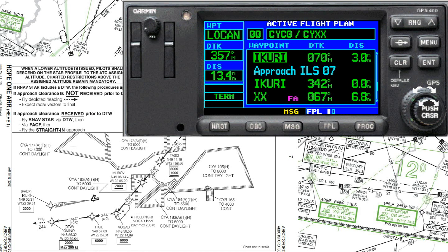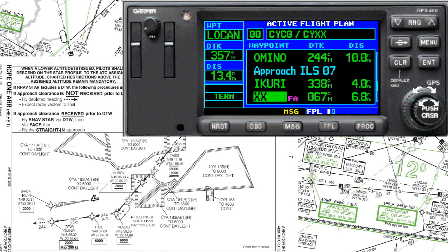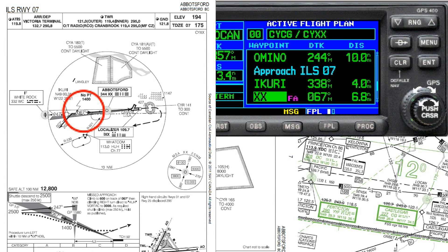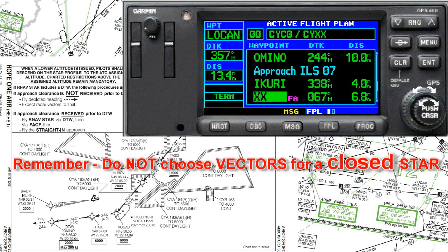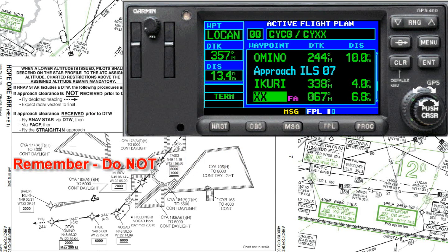If you're going to get vectors you'll need to hit the procedure button and reload the vectors version of the approach. But since we're closing the STAR, we just delete the first I-CURRY — clear, enter, it's gone. Now from AMINO we have bearing 338 to I-CURRY, that's perfect, and four miles — the correct distance. Then the next leg is ABSR, the final approach fix, bearing 067 and 6.8 miles. It's especially important to check this track: it's the one that gets fouled up if you mistakenly pick the vectors option. We're good to go.